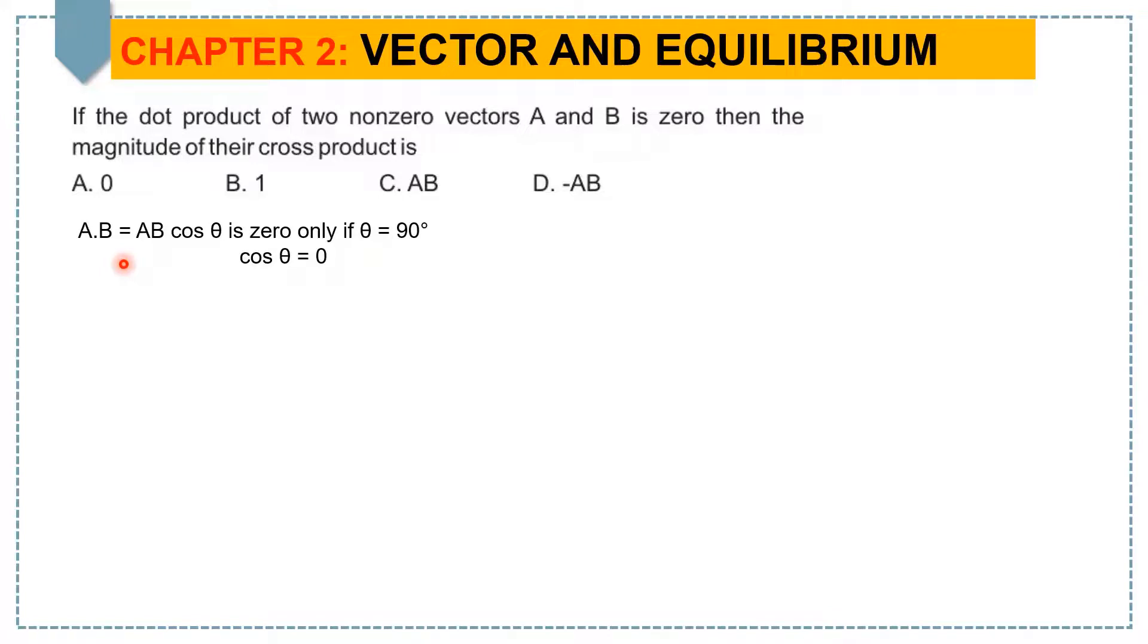Now if we take the cross product of both vectors, keeping θ = 90°, then we get A×B = AB sin θ. Here we have sin 90°, and you know sin 90° equals 1. Hence, A×B = AB. So the answer is AB, that is option C.